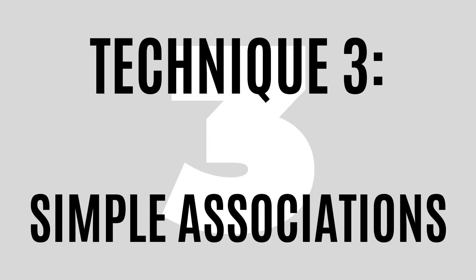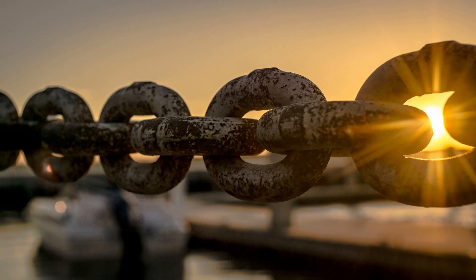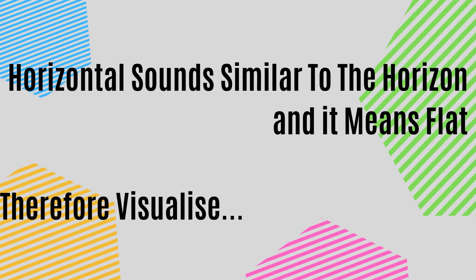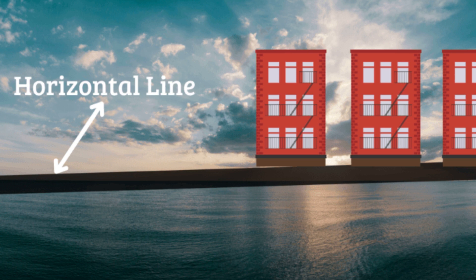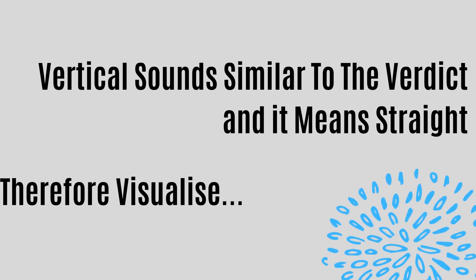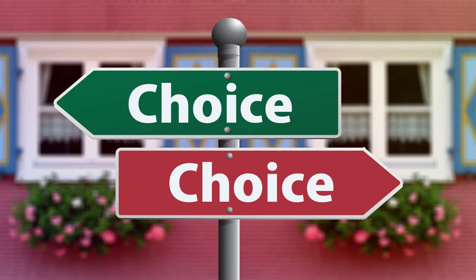Technique 3 – Simple Associations. This technique works by making simple associations between the word and its actual meaning. The word horizontal sounds similar to horizon and means flat. Therefore, make a funny association between the words horizon and flat — for example: 'There were 1,000 flats on the horizon.' The word vertical sounds similar to verdict and it means straight. So the funny association would be: 'A straight line was making an all-important verdict at the court.' You can use these associations or make your own. The choice is yours.